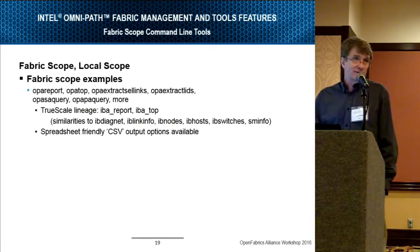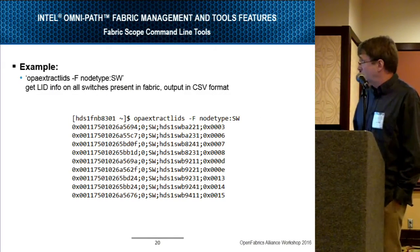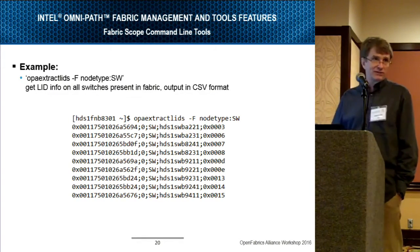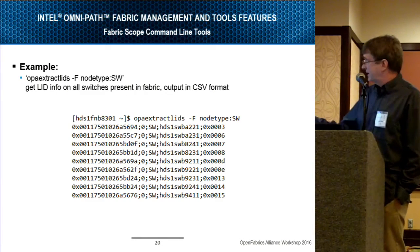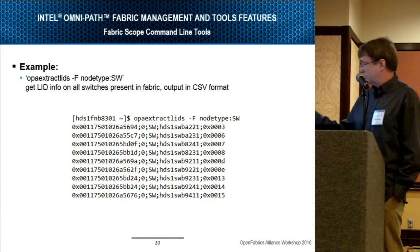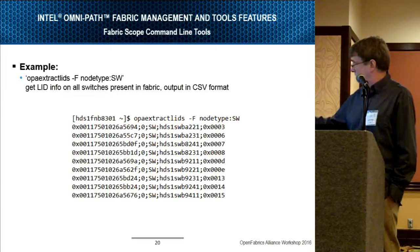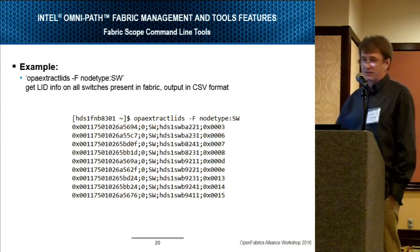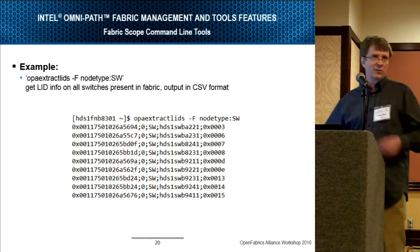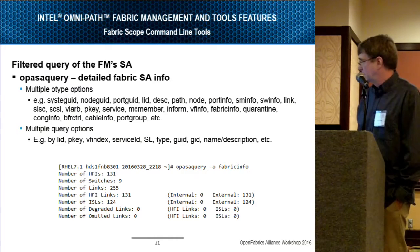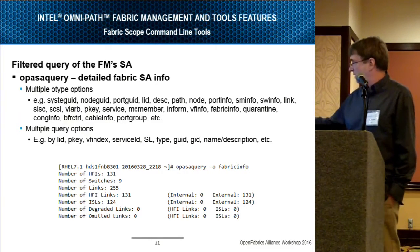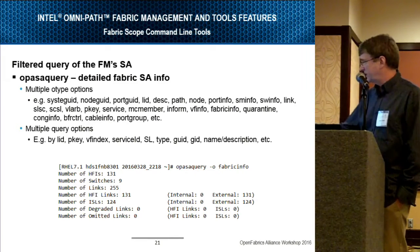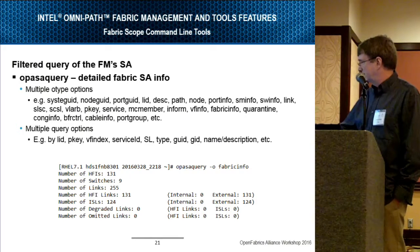CSV outputs are available from many of these commands. For example, if you want to know the LIDs of the switches in the fabric, you can ask for information that extracts the LIDs for all fabric entities that are switches, and get their descriptions, text names, LIDs, and whether they were managed or not — in CSV format if you prefer. A simple 'give me the fabric info' is essentially an SA query of the fabric as a whole — for example, showing nine switches and 100-something HFIs.